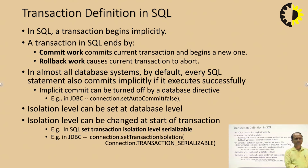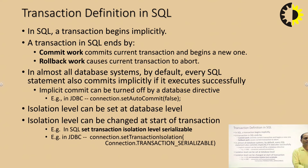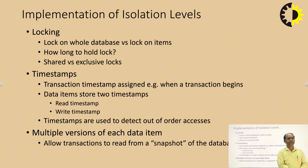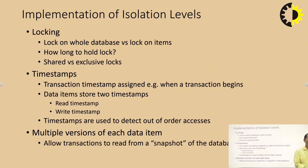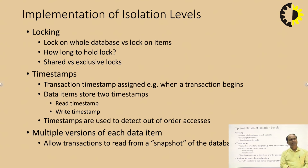In almost all databases by default, every SQL statement is also committed explicitly if it executes successfully. The isolation level can be set at the database level and can also be changed at the start of a transaction. To achieve concurrency through isolation implementation, we can use locking techniques, timestamp techniques, and multiple versions of each data item — these are the techniques used to achieve concurrency control in transactions.